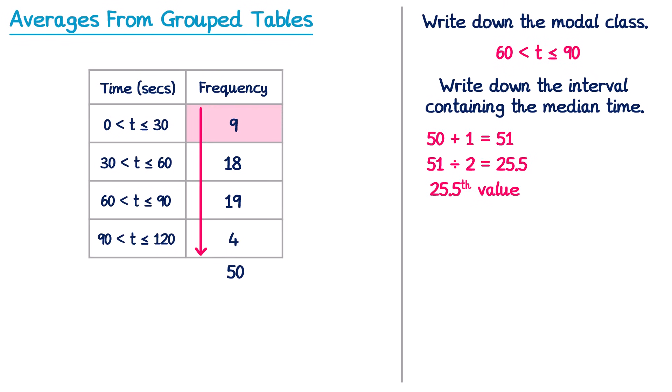Are they in the first group? Well we only have 9 people here, so they're not in that group. If we add in the 18 people from the second group as well, we do 9 plus 18 which is 27. You can see we've now gone past the 25.5th value, since 27 is bigger than 25.5, so it must be in this interval here. So the median is in the interval from 30 to 60.